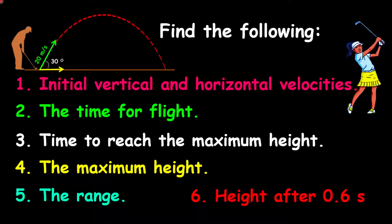A pleasant day to all. Today we are going to complete a projectile question. This question is about a golf player that hits a golf ball with a velocity of 20 meters per second. The ball's initial flight is 30 degrees to the ground. To further enhance your understanding of projectiles, we are going to answer six questions. Please have your notebooks ready so that you can pause the video and take notes where necessary.